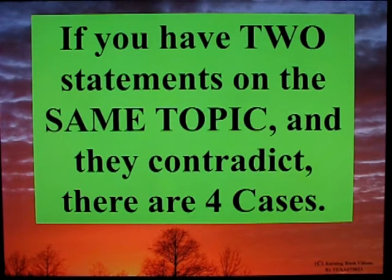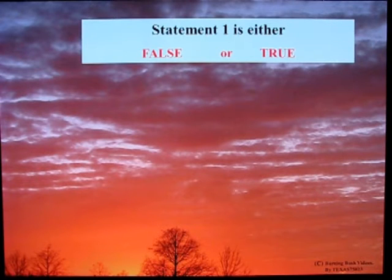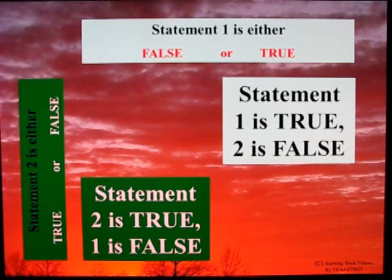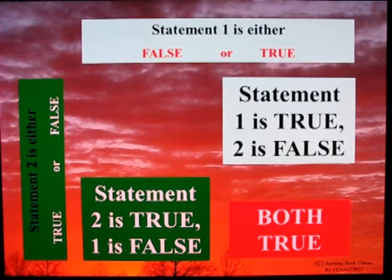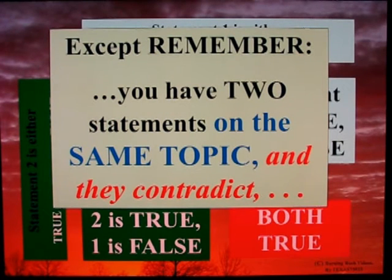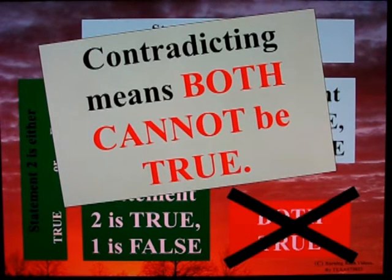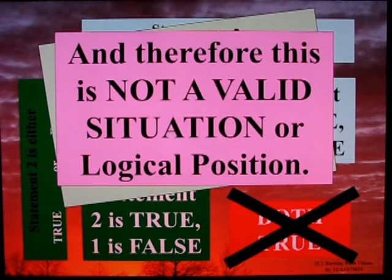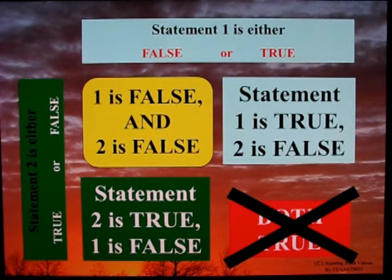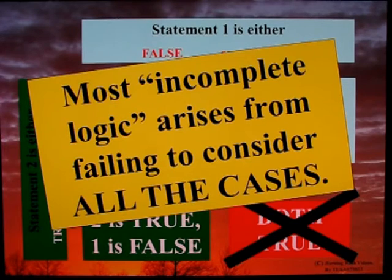If you have two statements on the same topic and they contradict, there are four cases. Statement one is either false or true. Statement two is either false or true. There are two cases where one or the other is true. There is a case where both are true, but since the statements contradict, both cannot be true — that is not a valid logical position. This leaves a fourth case to understand: statement one is false and statement two is false. Both are false. Most incomplete logic arises from failing to consider all the cases.